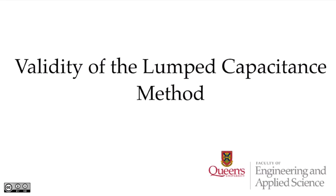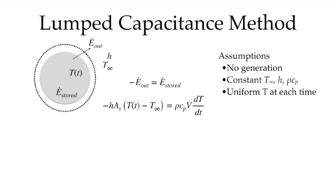In this video, I'm going to look at the validity of the lumped capacitance method. In the lumped capacitance method, we assume that there's no energy generation with constant properties, and that the part in question that's changing temperature is all at a uniform temperature at one given time, and that single temperature representing the entire object is changing with time.